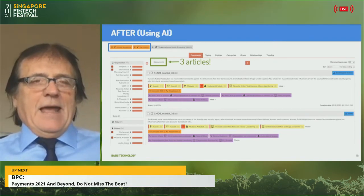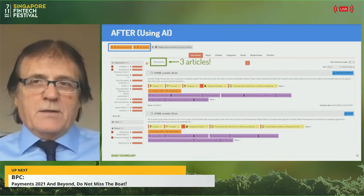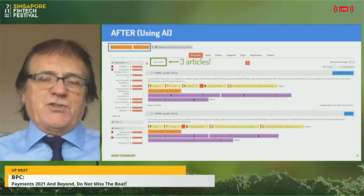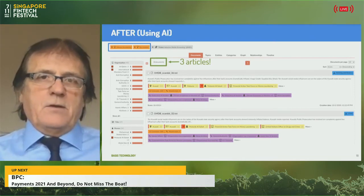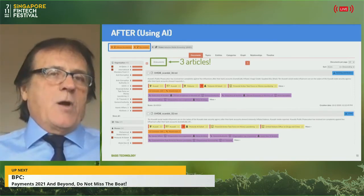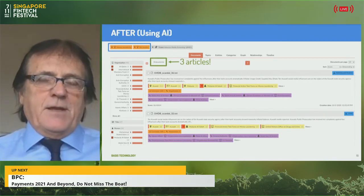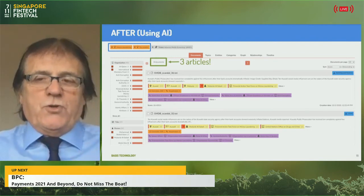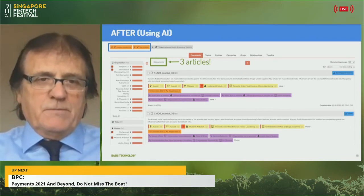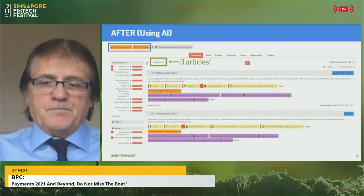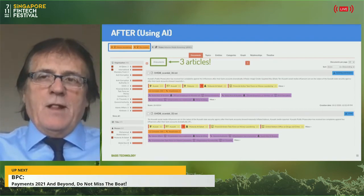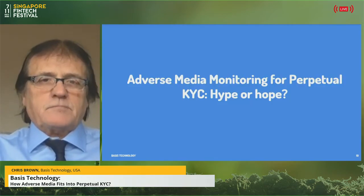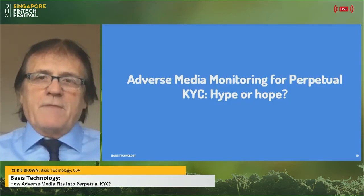This works across languages as well. You can put search strings in English and find relevant content in Chinese, Arabic, or Russian — without knowing those languages — and still filter to only what's relevant and important to you, across a wide variety of data sources.